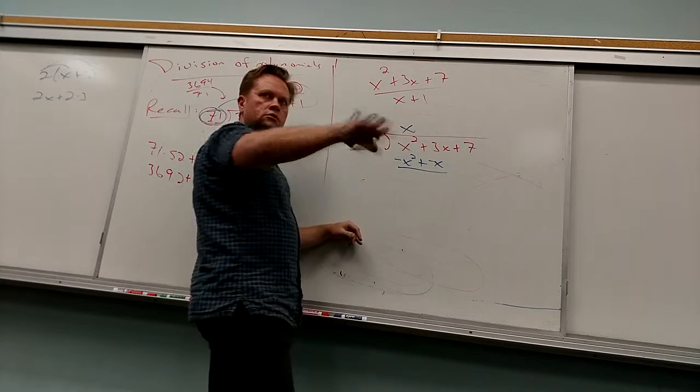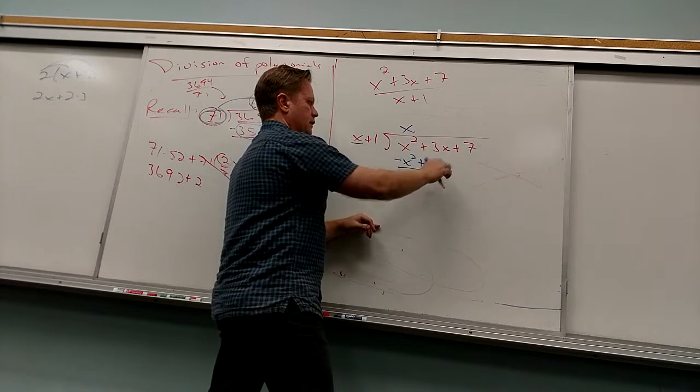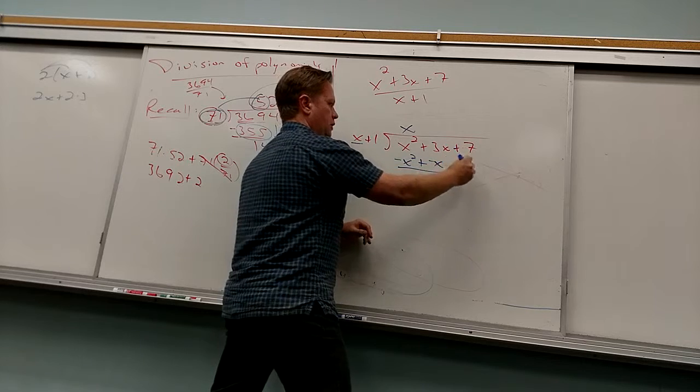What's X squared minus X squared? Yeah. 3X minus X? 2X plus 7. Good. Bring down the 7.